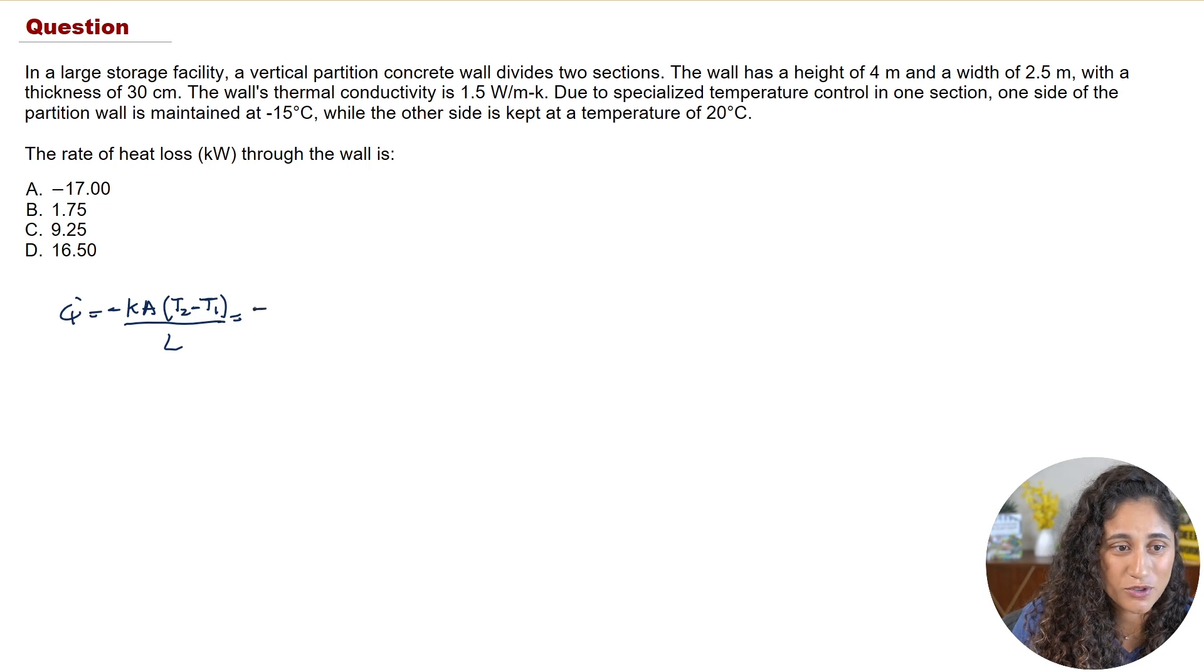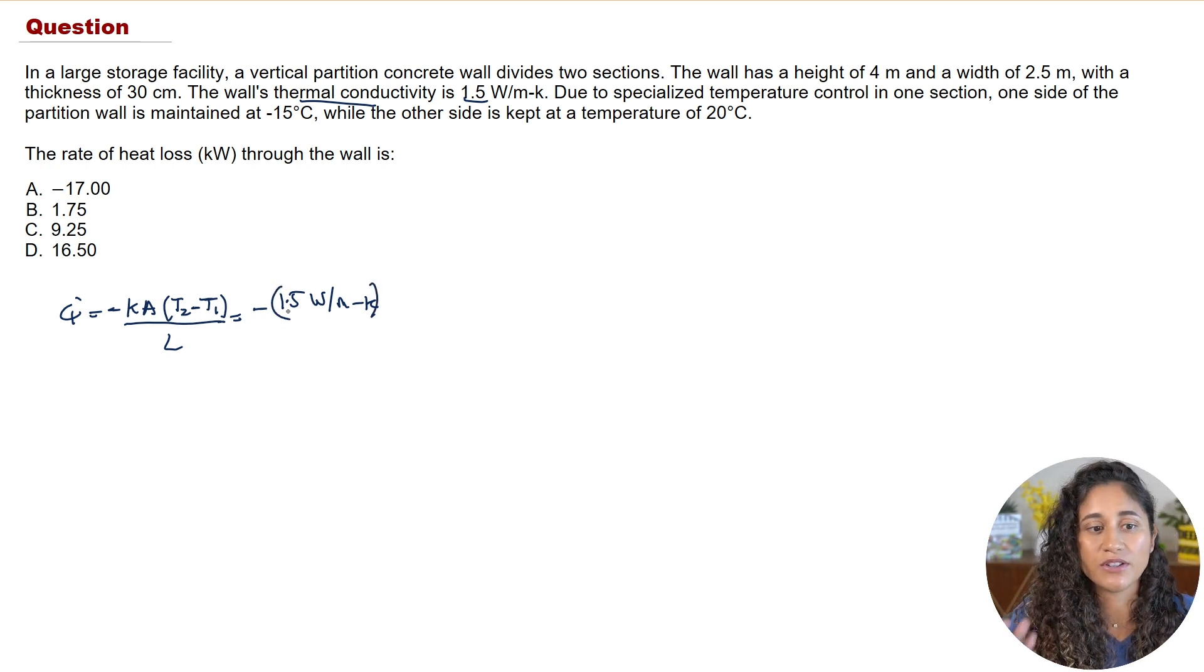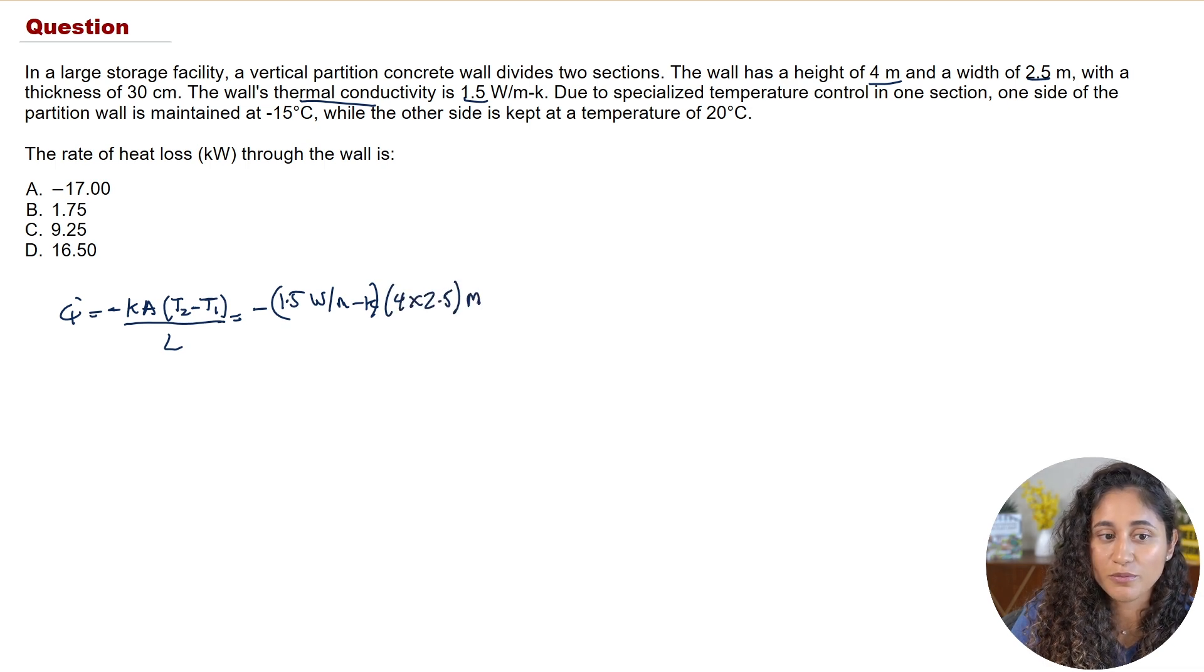Now let's go ahead and plug in the numbers so we're going to have K, the thermal conductivity which is 1.5 and I'm going to write the units. I always write the units, it really does help because then at the end you can always make sure that the units add up and if they don't add up that means you did something wrong so you can always go back and double check. It might take you a little bit more time on the FE if you write the units but it could save you if you do a mistake you can easily catch it.